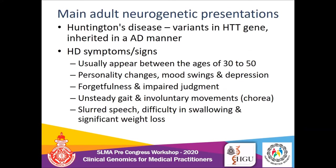In the adult neurogenetic disease category, Huntington's disease is quite commonly encountered, caused by variants in the huntingtin gene and inherited in an autosomal dominant manner. It is an adult-onset condition, with patients usually presenting from the third decade onwards with varying neurological symptoms including personality changes, impaired judgment, motor signs such as unsteady gait, involuntary movement, slurred speech, and difficulty swallowing, resulting in significant weight loss.